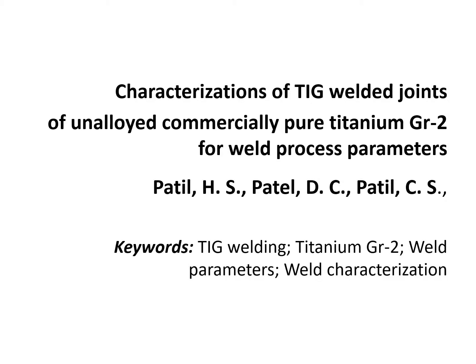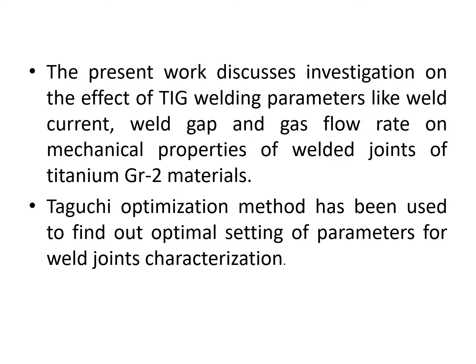This research article represents the characterization of TIG welded joints of unalloyed commercial pure titanium grade 2 for welding process parameters. The present work discusses the investigation on the effect of TIG welding by considering various weld process parameters like welding current, weld gaps, and gas flow rate on mechanical properties of titanium grade 2 materials. The Taguchi optimization method has also been used to find out the optimal settings of the weld process parameters for joint characterization.